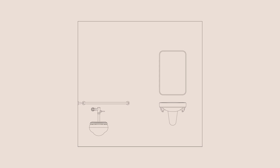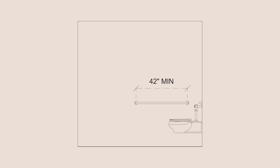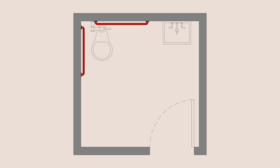The grab bar located at the back wall behind the toilet must be 36 inches minimum in length. It must also be placed as shown on this elevation, with the wall end of the grab bar a minimum of 12 inches away from the center of the toilet. The grab bar located on the sidewall must be 42 inches minimum in length and placed a maximum of 12 inches away from the back wall. Instead of having two separate grab bars, you may also have one continuous grab bar as long as it satisfies all of these same conditions.